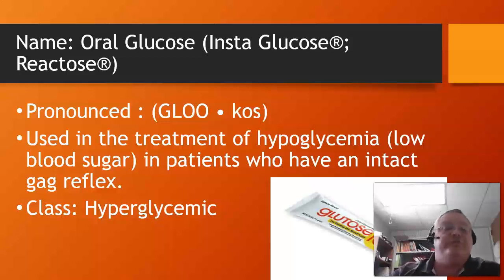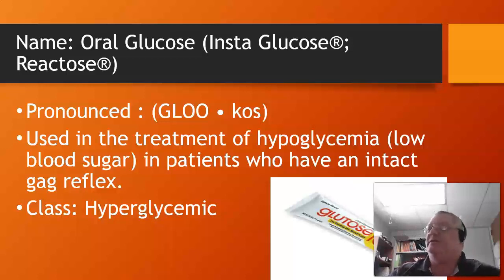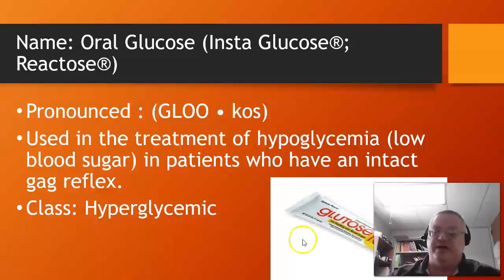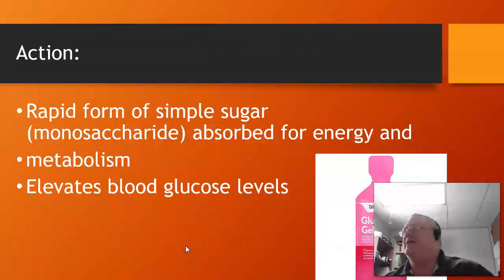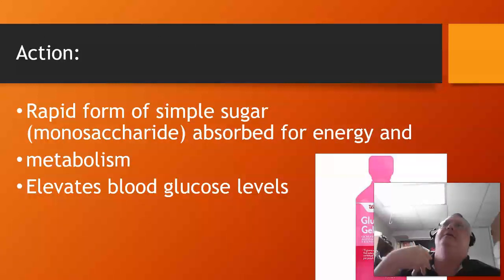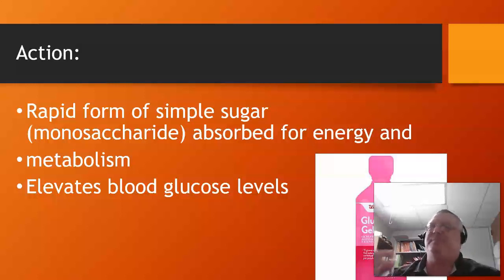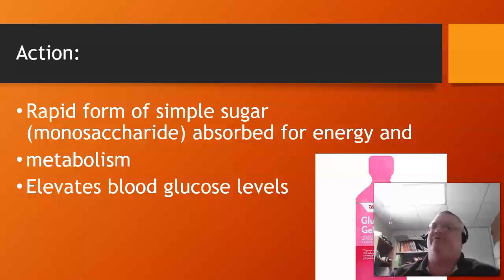Glucose is used to treat hypoglycemia — low blood sugars — when the person has an intact gag reflex. It is pure sugar. It's a monosaccharide, so it's the type of sugar that easily absorbs into the bloodstream and almost immediately provides instant energy. It doesn't have to be processed or broken down any further, and it elevates blood glucose levels.